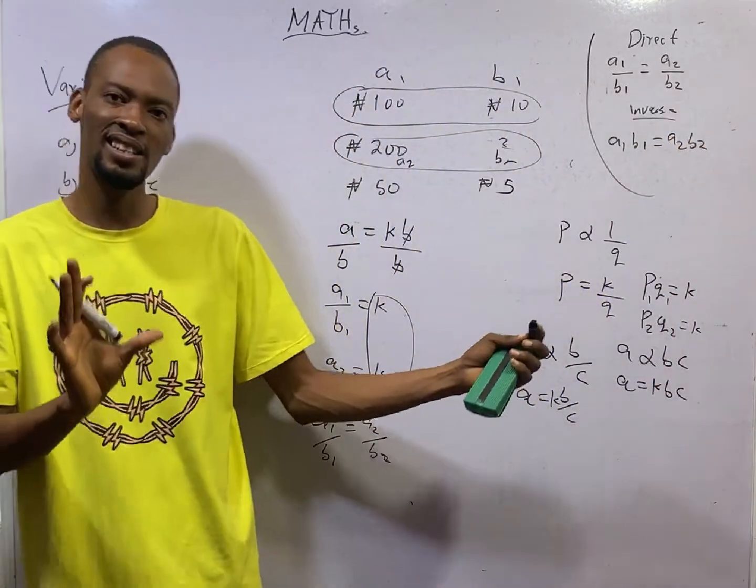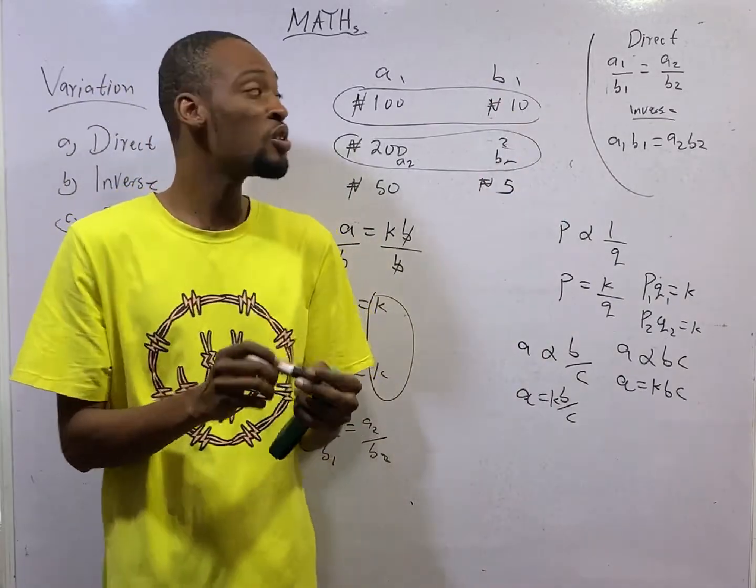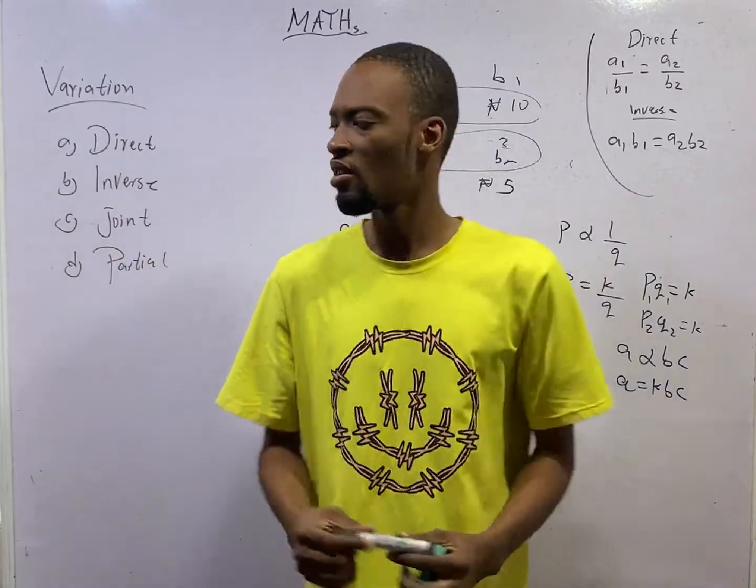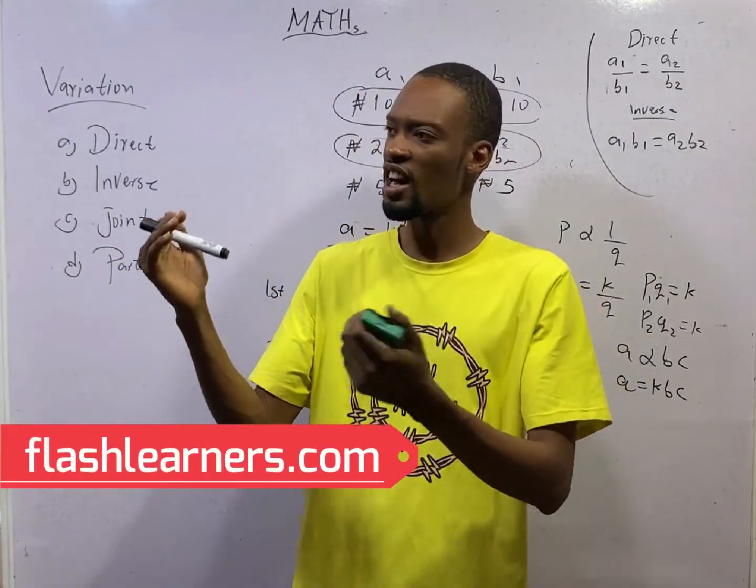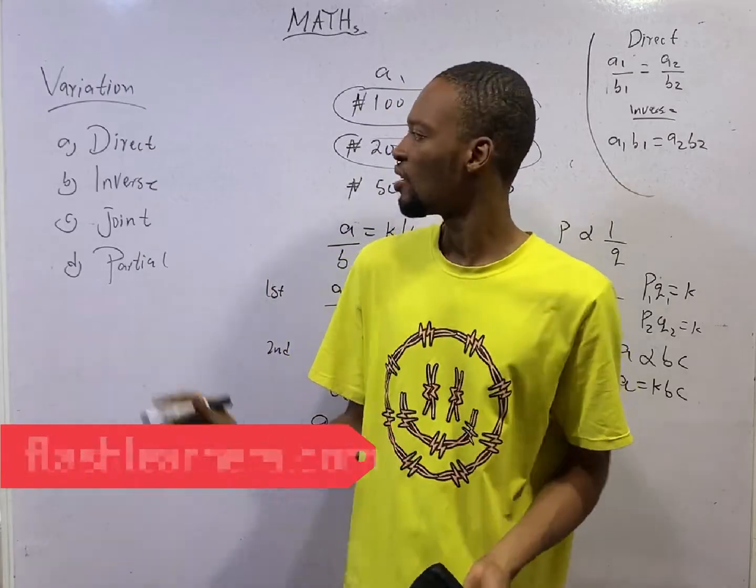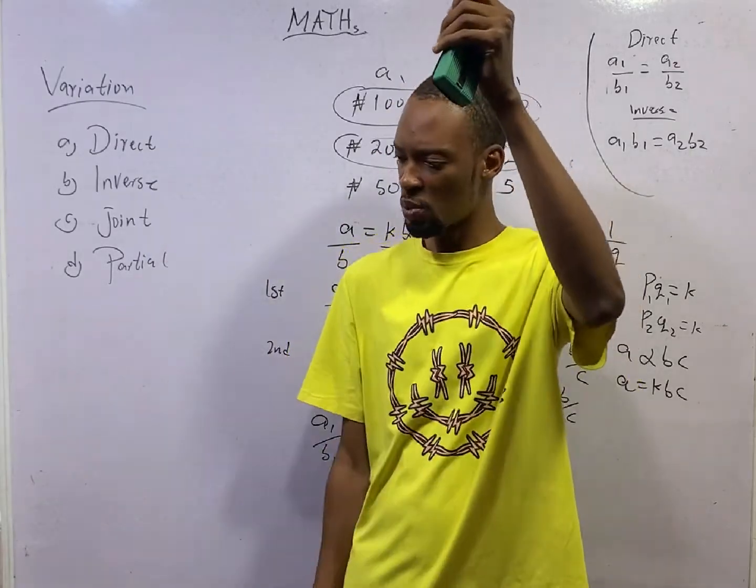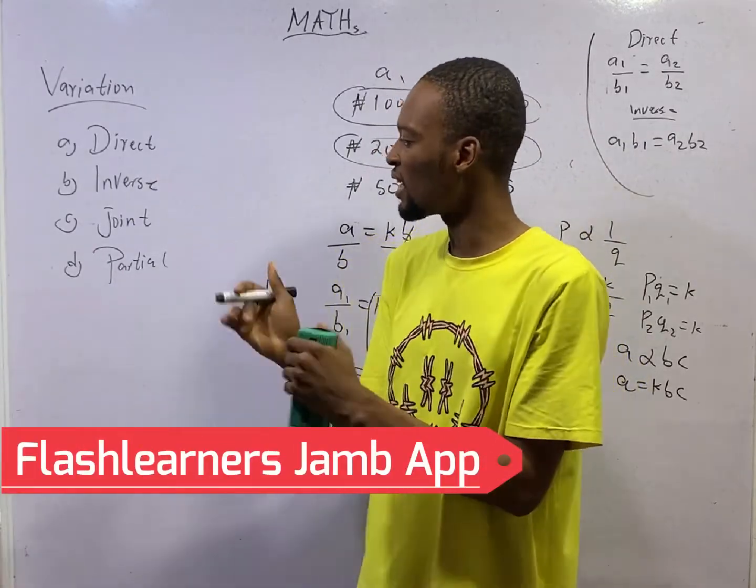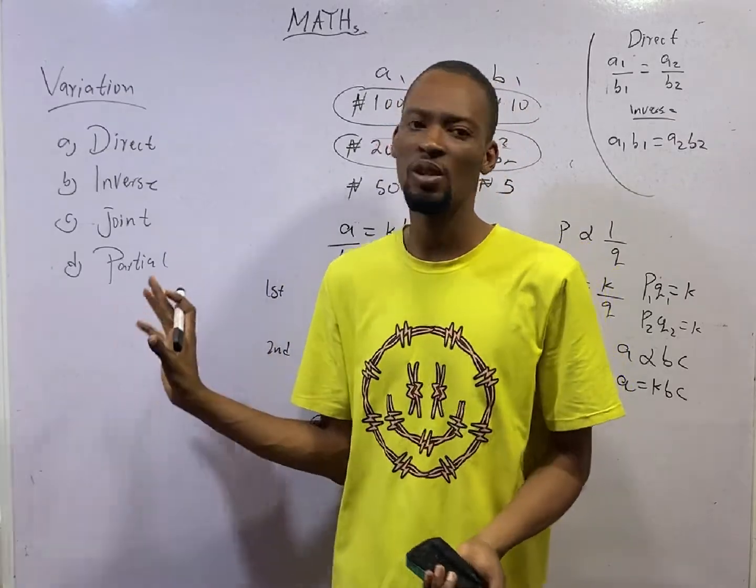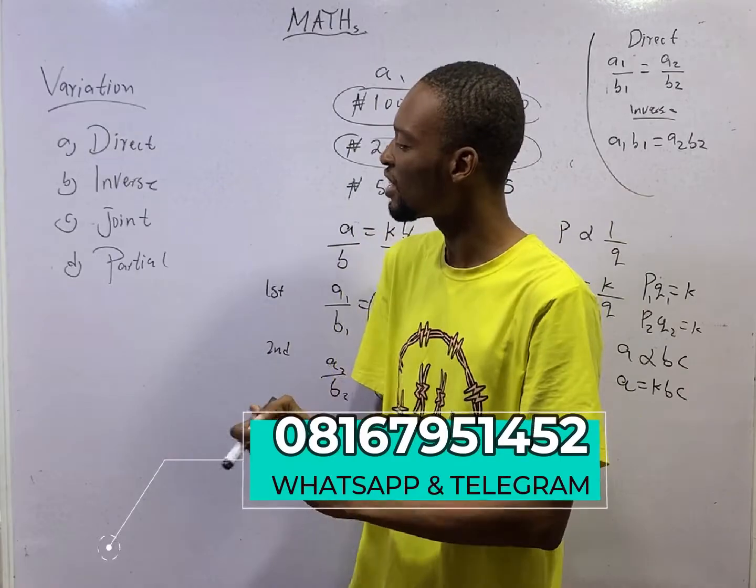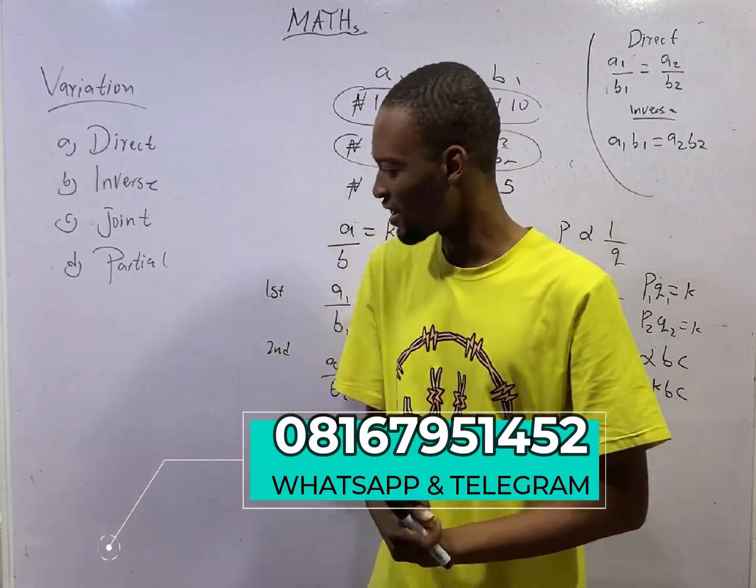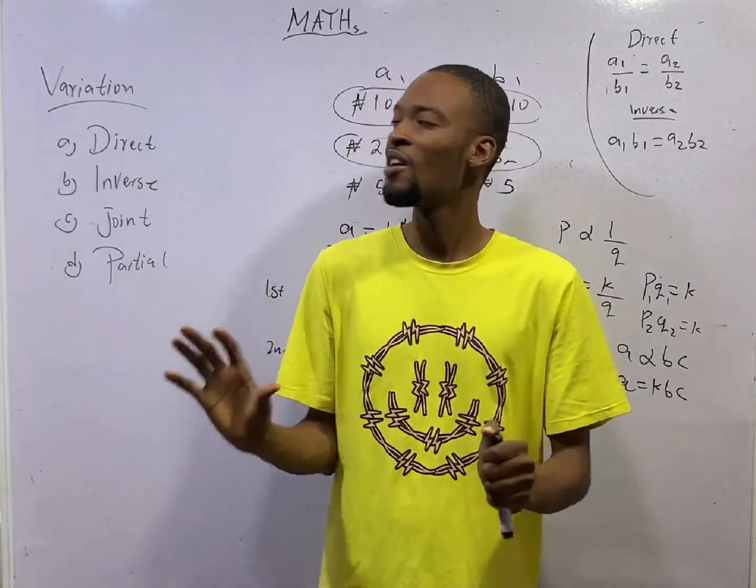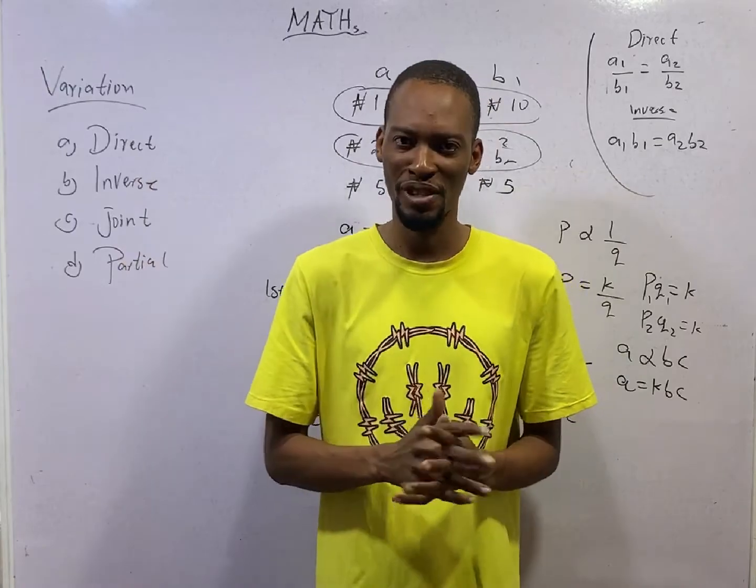Let me assume you don't understand the uses yet. From the next episode, you will see how useful this formula will be. In summary, for direct variation, as one quantity is increasing, the other is increasing. As one is reducing, the other is reducing. For inverse, as one is going up, the other is coming down. As one is going down, the other is coming up. Joint combines both direct and inverse variation. And partial tells us when something is partly constant and also partly varies directly or inversely at the other. So see you in the next episode, where we shall be doing applications or calculations of all those things we have explained so far.